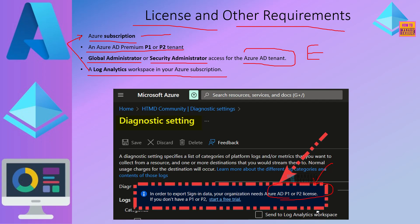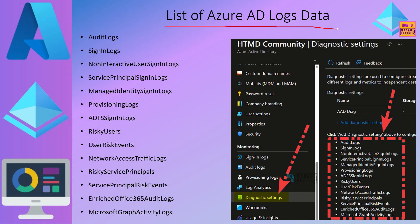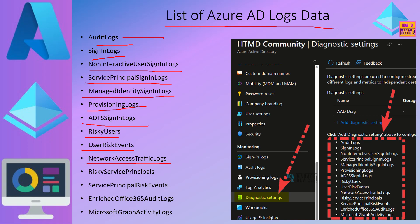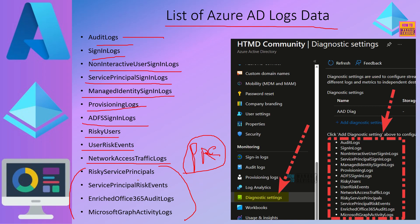This is the licensing requirement specifically mentioned in the diagnostic settings configuration page itself. The log categories within Azure Active Directory include: audit logs, sign-in logs, non-interactive user sign-in logs, service principal sign-in logs, managed identity sign-in logs, provisioning logs, ADFS sign-in logs, risky users logs, user risk events log, and network access traffic logs. The last four logs are under preview. If your tenant is not in private or public preview, you won't be able to export these logs to Azure Monitor or log analytics workspace.